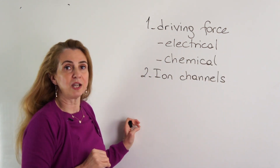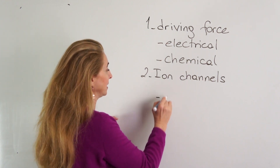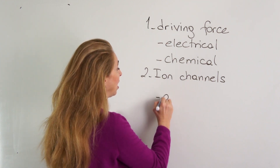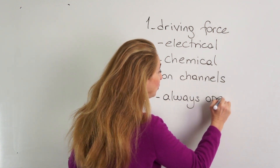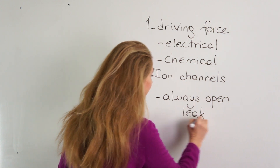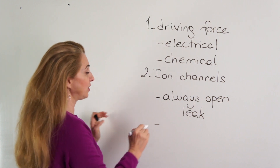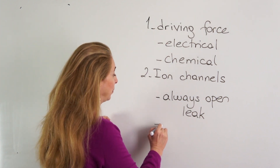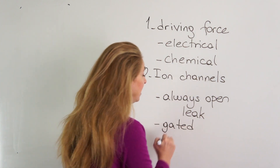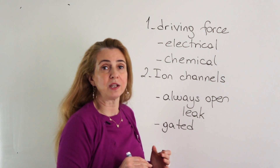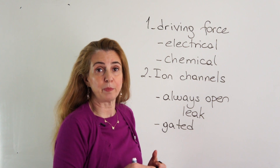What about ion channels? Ion channels can be of two types. The first group is the ion channels that are always open — these channels are also called the leak channels. The second group of ion channels are not always open, and they are called the gated channels. Gated channels require some conditions to open up and let the ions pass.